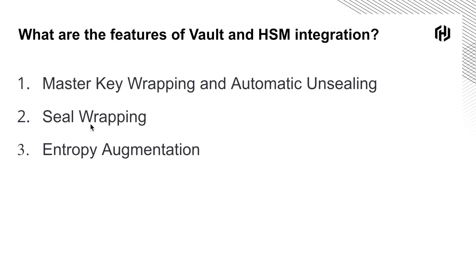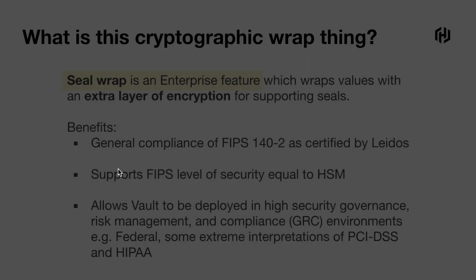Third, seal wrap: you can provide FIPS key storage conforming functionality for critical security parameters, defined by the level of security you need at your organization. Fourth, entropy augmentation — a more advanced topic: vault leverages the HSM for augmenting system entropy via PKCS #11 protocol. In other words, vault provides an additional layer of security — or better said, randomization — while it creates its keys.